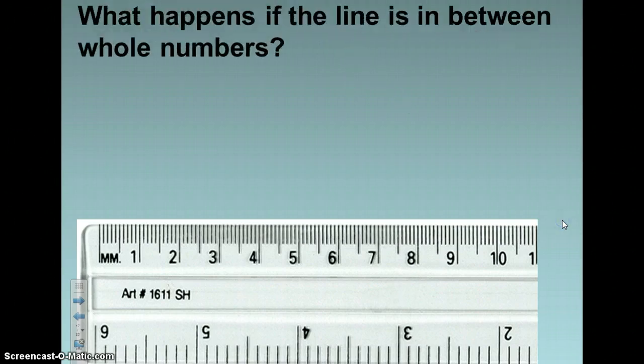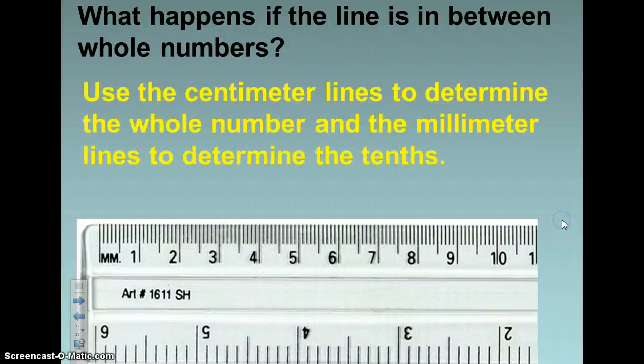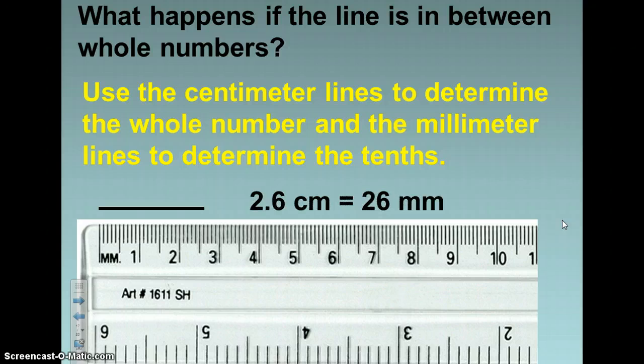What happens if the line is in between whole numbers? You use the centimeter lines to determine the whole number and the millimeter lines to determine the tenths. This line shows that it is 2 and 6 tenths centimeters, or 26 millimeters.